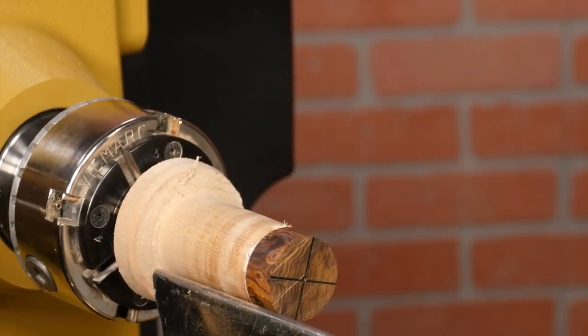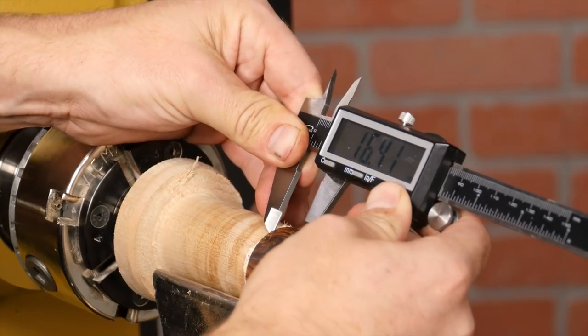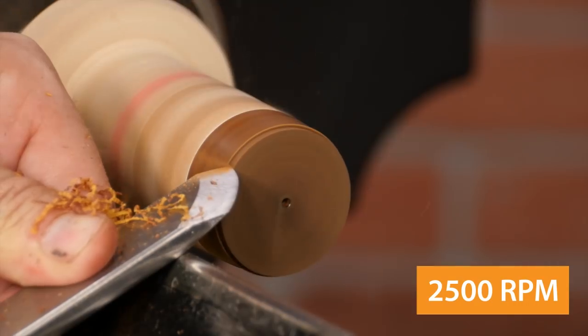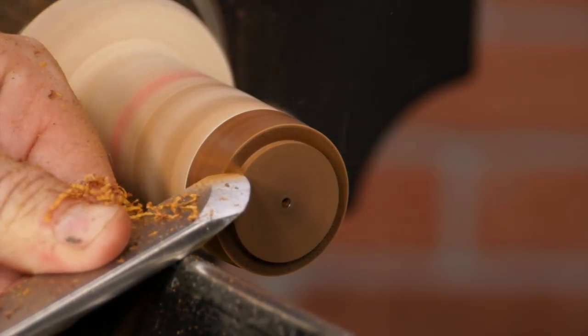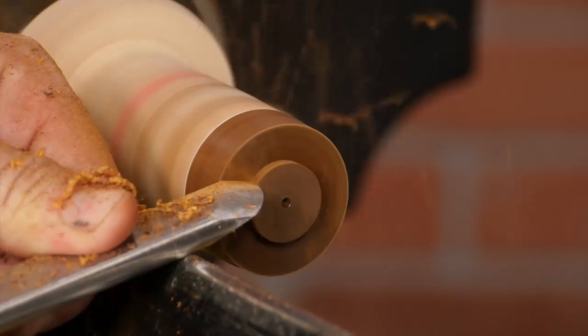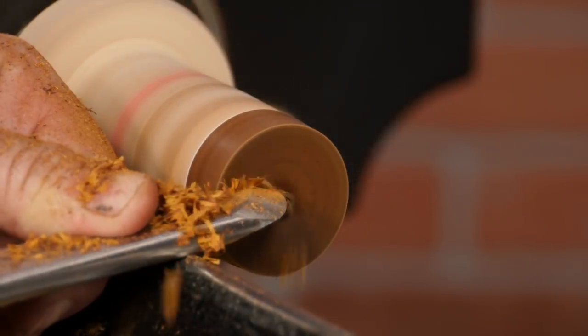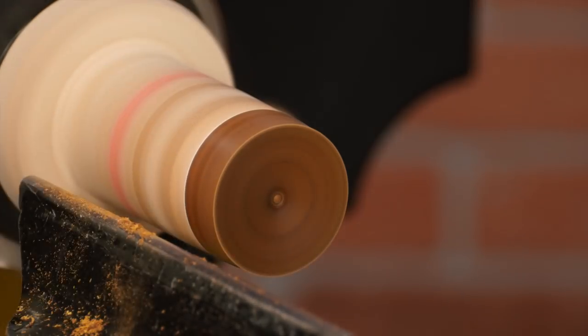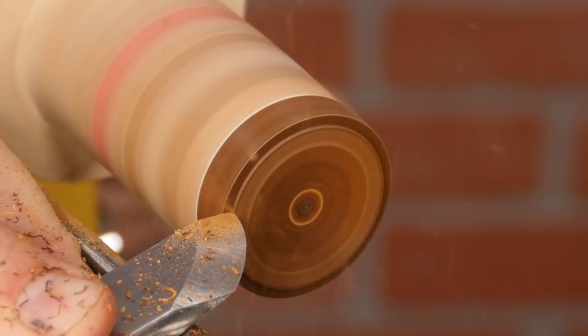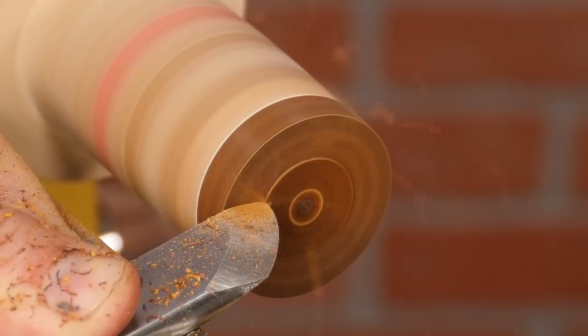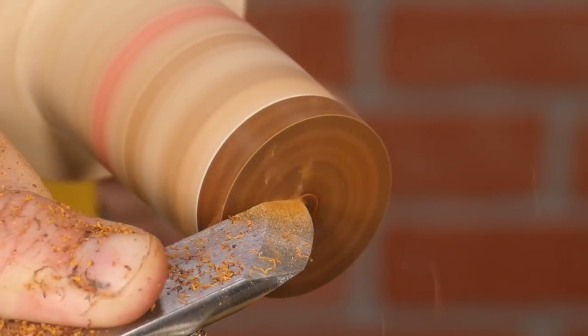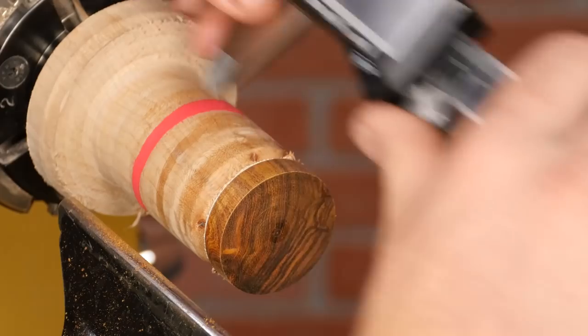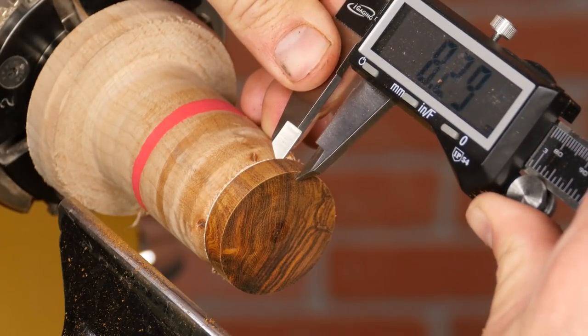Once the blank is round it's critical that we turn the blank's thickness just a hair over six millimeters wide. Use your digital calipers here to double-check your work because this needs to be precise.